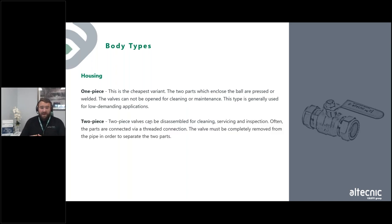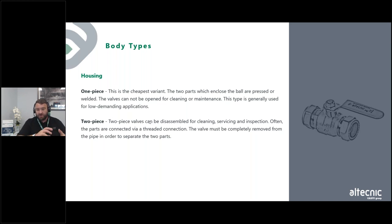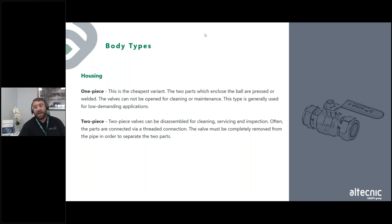Moving on, the two-piece valve is probably the most common valve we see in our sector. A two-piece valve can be disassembled for cleaning, servicing, and inspection — the parts are often connected via a threaded connection. The valve must be completely removed from the pipeline to separate the two parts. You have a main body, the ball is inserted, and then a secondary part is screwed together with two ball valve seats holding the ball in place. The image on the right-hand side here shows a two-piece ball valve.